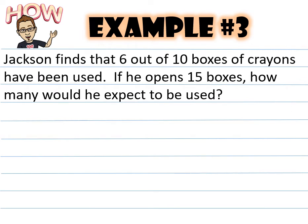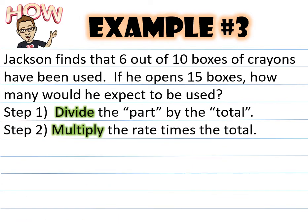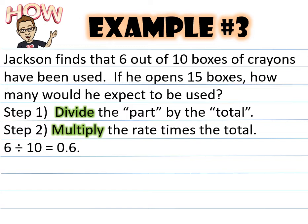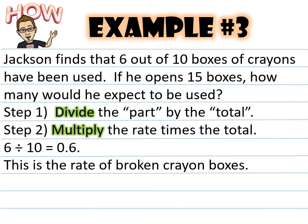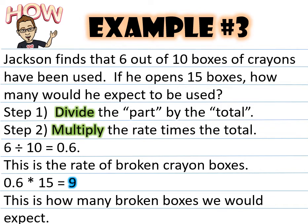Example number three: Jackson finds that six out of ten boxes of crayons have been used. If he opened 15 boxes, how many would he expect to be used? Step one: divide the part by the total — six divided by 10 gives a decimal of 0.6. This is the rate. Step two: multiply the rate times the total — 0.6 times 15 equals 9. That means we expect 9 boxes to have been used.